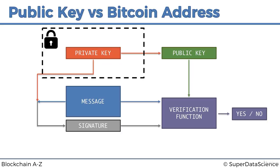Let's have a look. Here's our diagram. Up to now we've got a private key which generates the public key. The private key is used to create the message and then to give the message they create the signature. Then the public key, message, and signature all go to the verification function to get a yes or no answer.